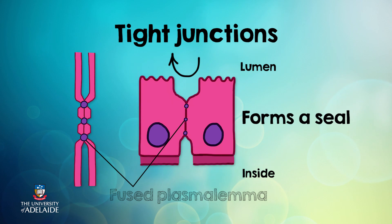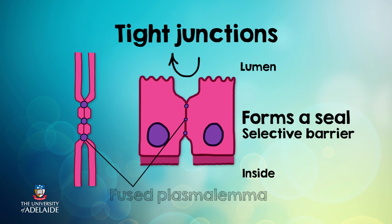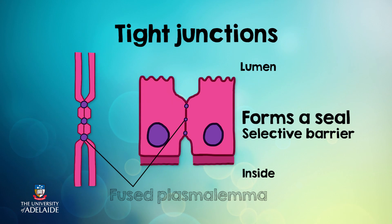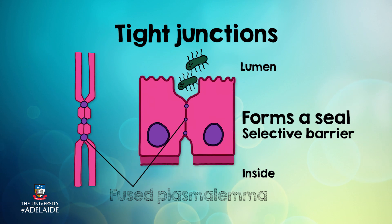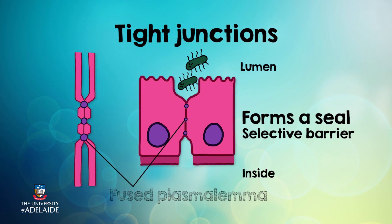The epithelial cell also acts as a security guard, choosing what passes from the luminal side into the body, or what passes from one side to the other. Tight junctions can be found in the epithelium that lines your intestine. As you can see in this diagram, when there are tight junctions present, bacteria are unable to pass between the cells and enter the body. If we didn't have these tight junctions, the cells would not be tightly held together, and the bacteria would easily be able to pass between them and enter the body.